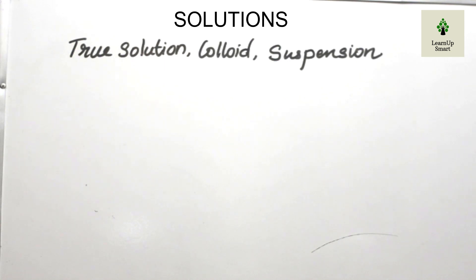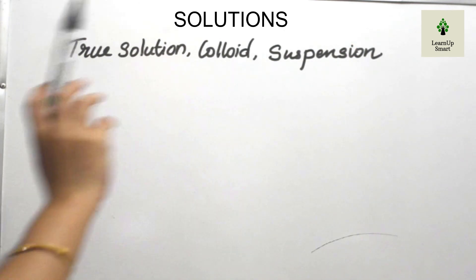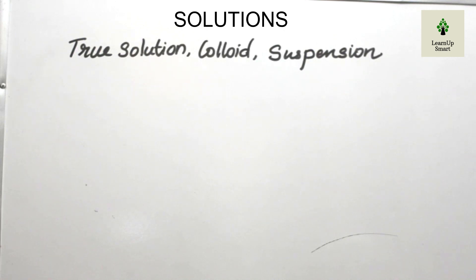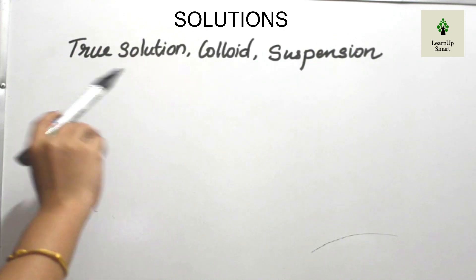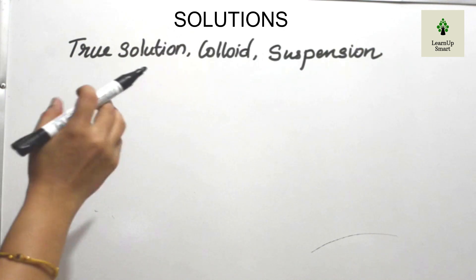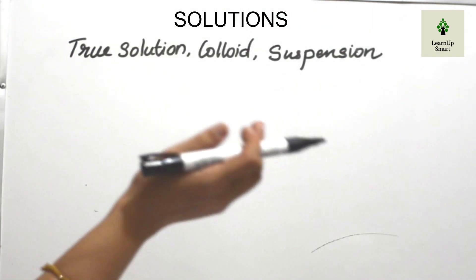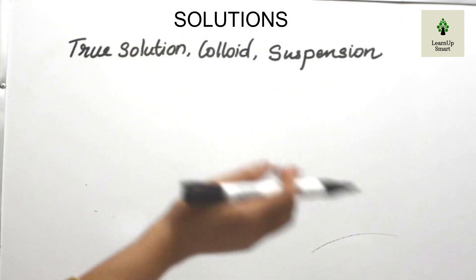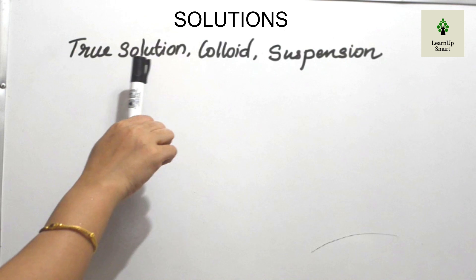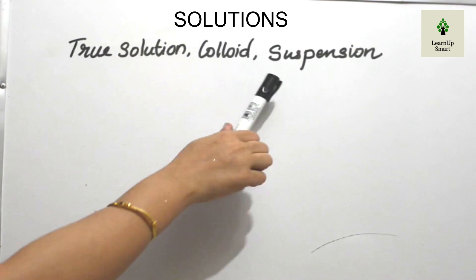This is the fourth part of the 8th Standard Chemistry chapter. The topic is True Solutions, Colloids, and Suspension. In this chapter, we learned about true solutions, the concentration of the solution, how to measure it, saturated solutions, and super saturated solutions. Now we move to Colloids and Suspension.